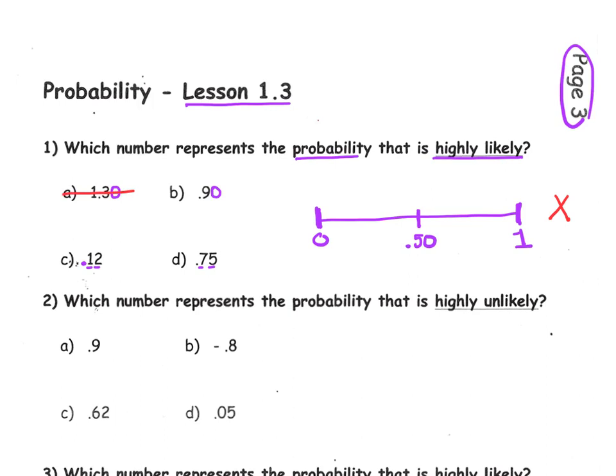Let's go to choice B. That would be located approximately here. Choice C would be quite low on the probability scale. And choice D would be just about here. Remember, to be highly likely, you're close to the number 1. So the best choice here is B.